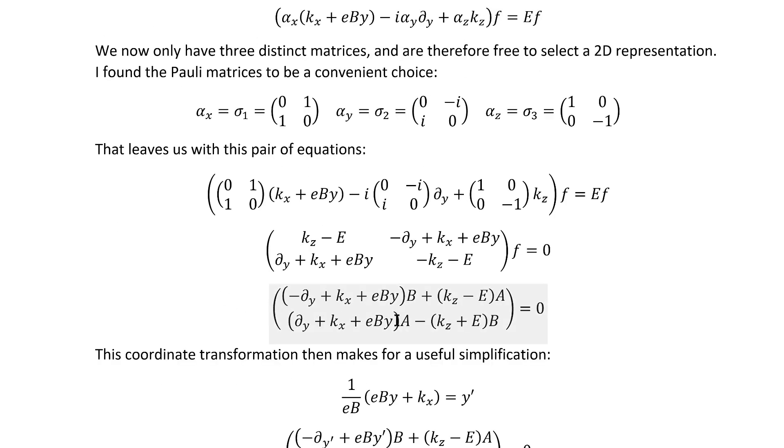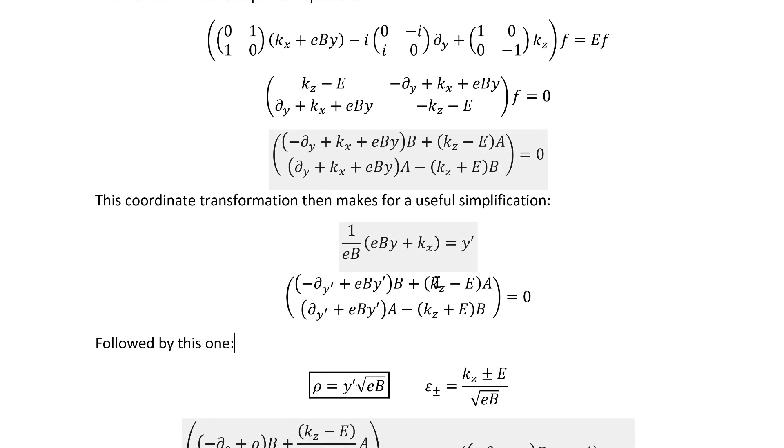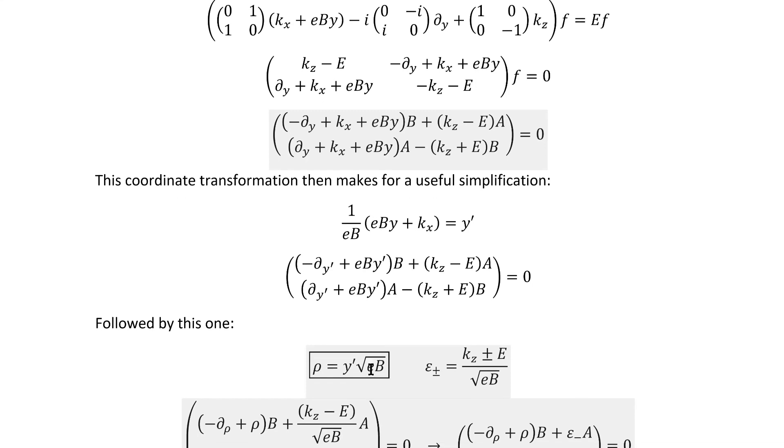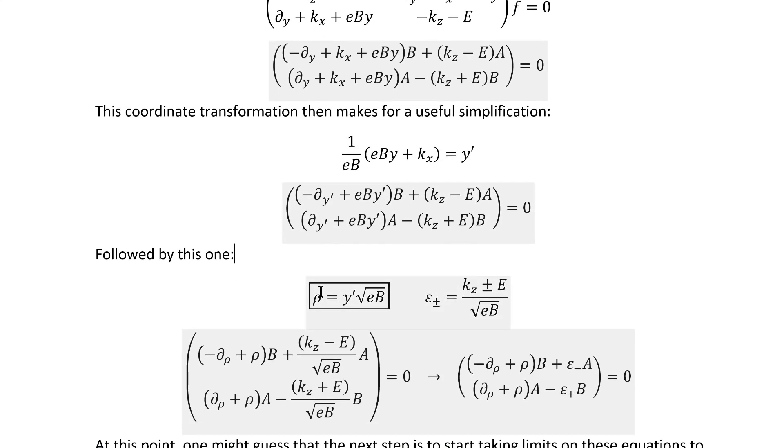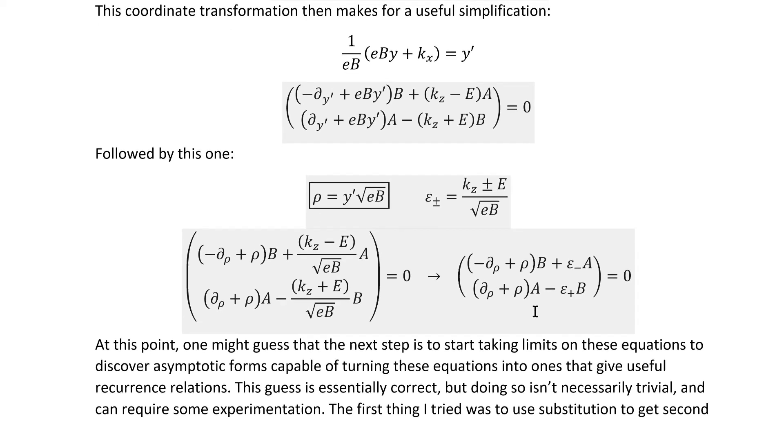Multiplying all that out ultimately leaves us with this pair of equations. It turns out that the same coordinate transformations that we used in the Schrodinger equation video, the portion on eigenfunctions, also simplifies things down quite conveniently here. First of all, we can shorten these first terms, and then we can simplify it further by rescaling the variables as long as we also introduce these constants. The equations we get are satisfyingly simple.